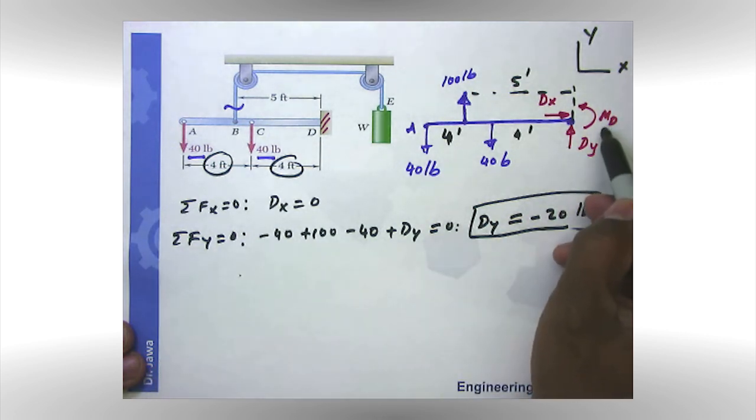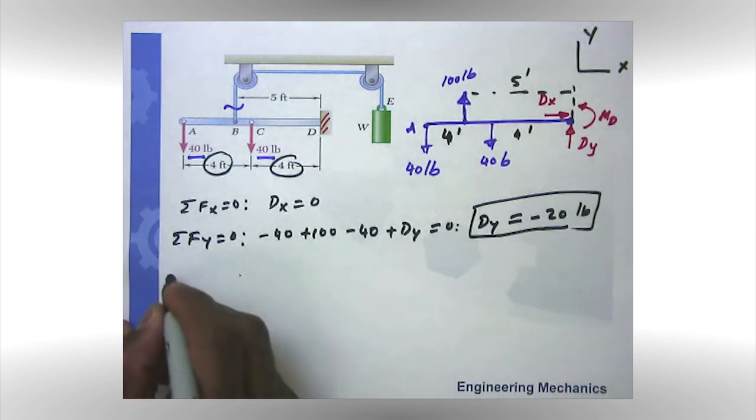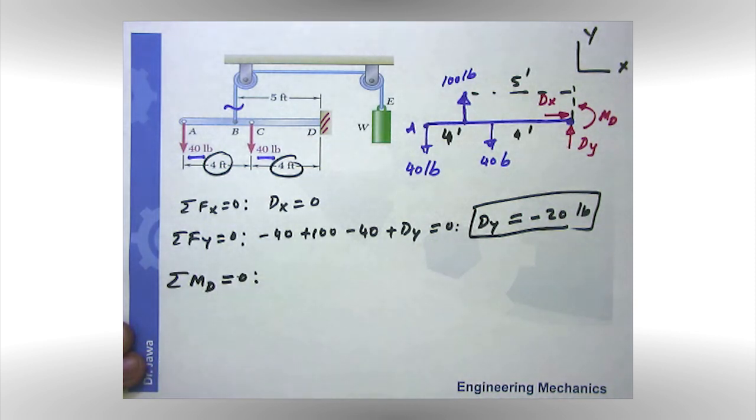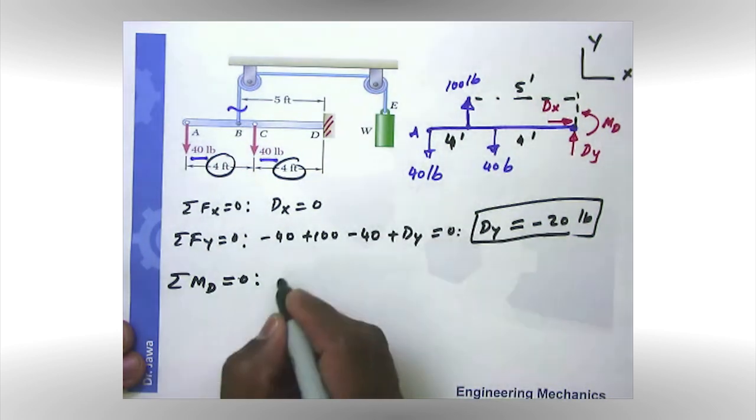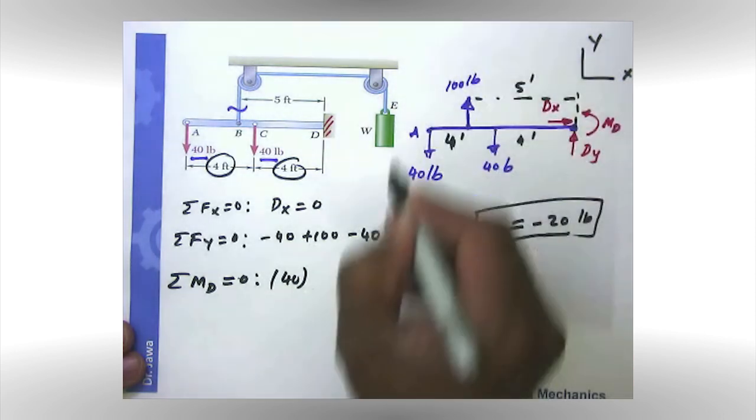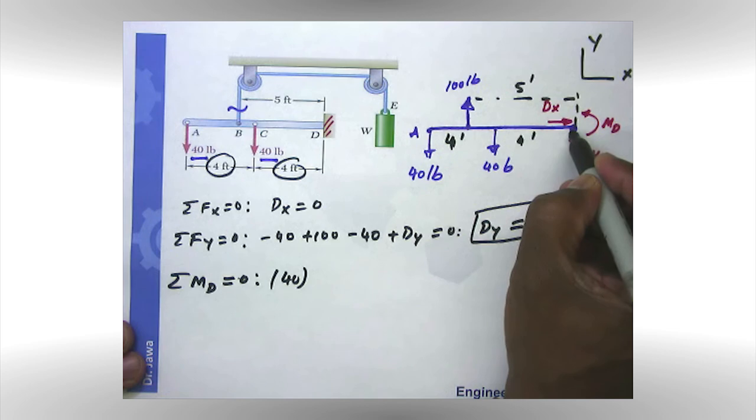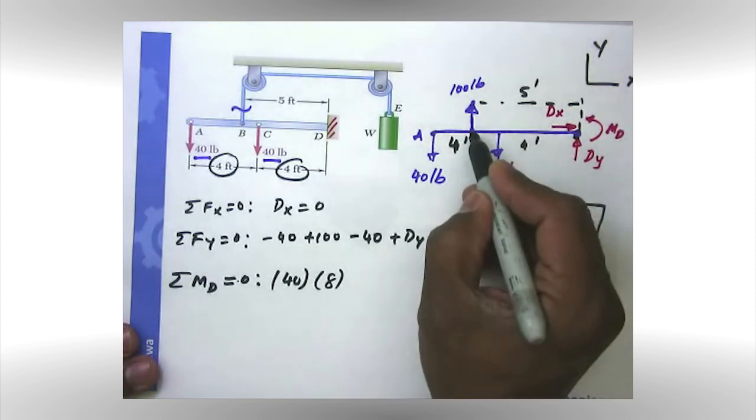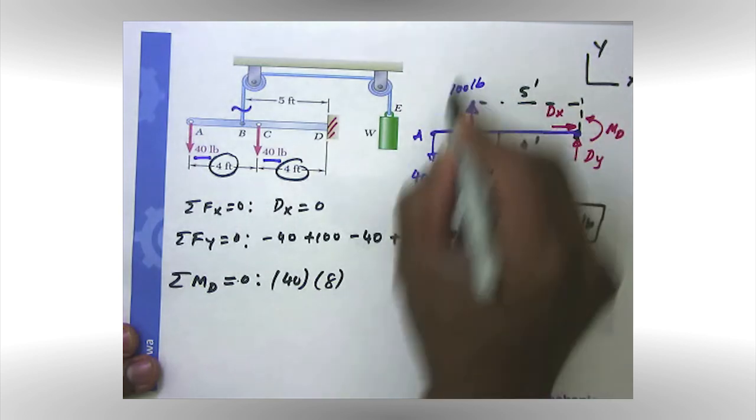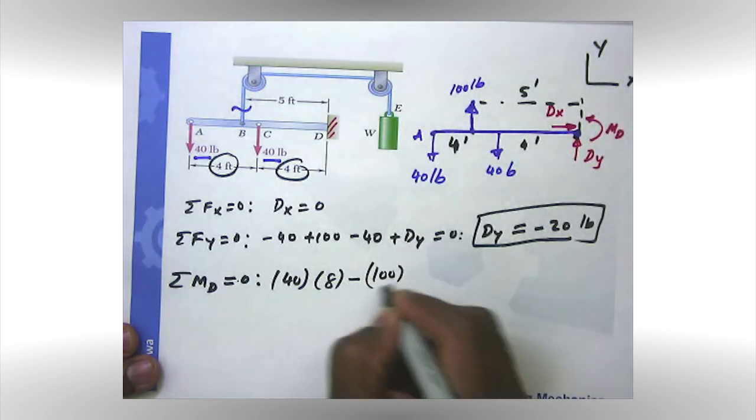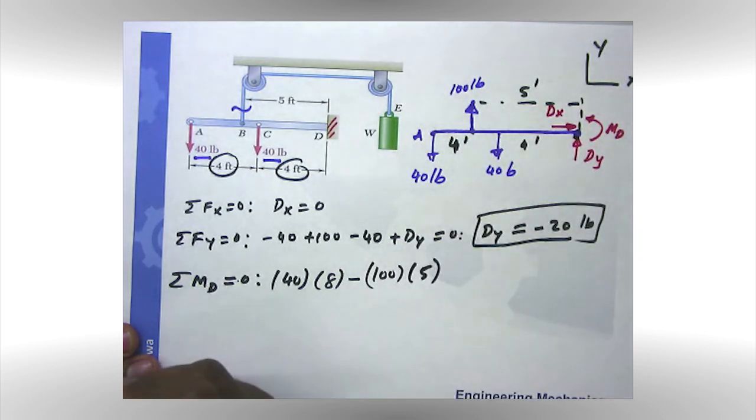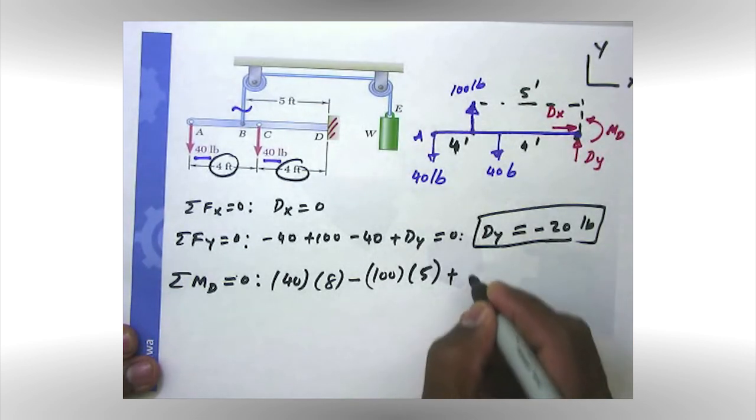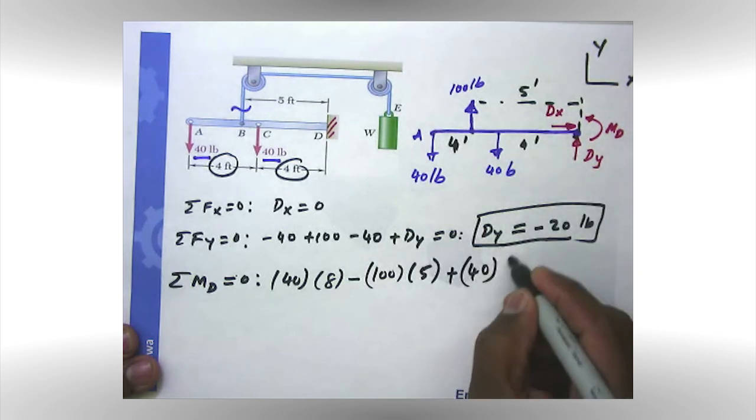So we have calculated or determined the magnitude of D_x as well as D_y. Now we still need to find the moment about point D. And in order to find that, we are going to write an equation. Sum of all the moment due to all the forces in this system about D should be equal to zero for static equilibrium. So I'm going to start with this force, 40 pounds. And this 40 pound force is going to give you a counterclockwise moment about point D. So it's going to be positive. So positive 40 times this total distance is 8 feet. Then I move on to the next force, 100 pounds. And that's going to give a clockwise moment. So it's going to be negative 100 times this distance, which is 5 feet. Then I move on to the next force, which is the next 40 pounds. And that's going to give you a counterclockwise, which is positive. So plus 40 times this distance is 4.